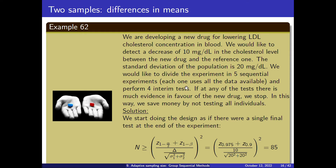If at any of these tests there is much evidence in favour of the new drug, we will stop. In this way we save money, and it is more ethical because we are not testing all individuals. We start by doing the design as if there is a single test at the end. This is the standard sample size calculation that we did when computing differences between means.